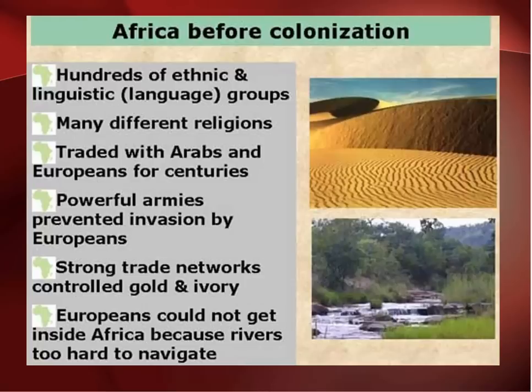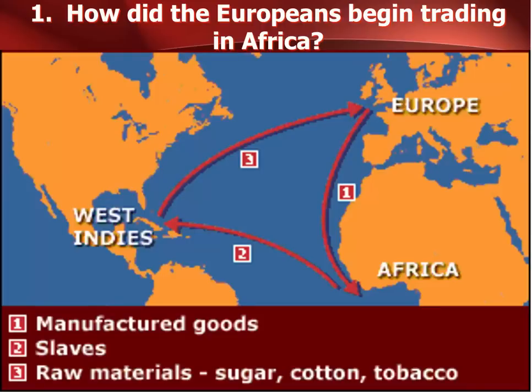When you talk about how Europeans began trading in Africa, you have to talk about the slave trade. The height of the slave trade was 1500 to 1750. Trading in slaves was not something considered new in Africa. The Romans had been using African slaves since the 7th century, and the Arabs, with their camel caravans going across the Sahara Desert, carried gold and slaves northward to the Mediterranean, in return for things like cotton, wool, copper, and brass.